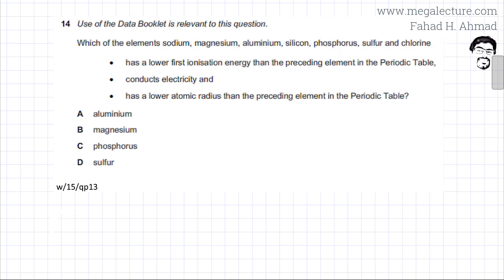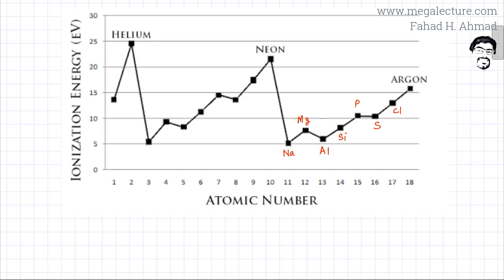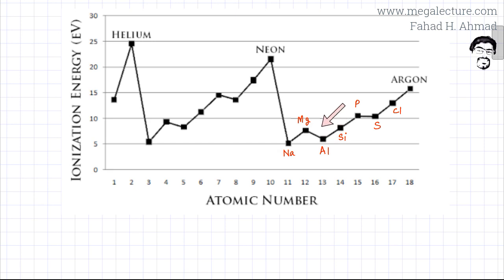Let's focus on this first statement: the element should have a lower first ionization energy than the preceding element in the periodic table. Looking at the first ionization energy graph, you can see that across the period from sodium to chlorine, as you move across the period, the first ionization energy generally increases. The element that has a lower ionization energy compared to the previous element would be aluminium, because aluminium has a lower ionization energy compared to magnesium.